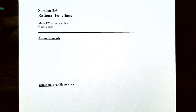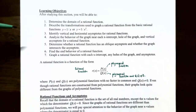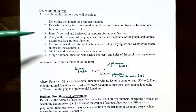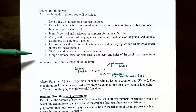Hi everyone, it's Professor Primton. In this video we're going to continue our discussion on rational functions. In the previous video we talked about how to determine the domain of a rational function and we described the transformations used to graph a rational function from the basic rational functions y equals 1 divided by x or y equals 1 divided by x squared. In this video we're going to talk about how to identify the vertical and horizontal asymptotes for rational functions, determine whether a rational function has an oblique asymptote, and also find the end behavior of a rational function.